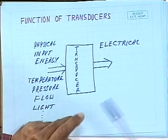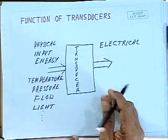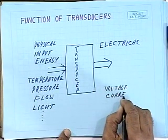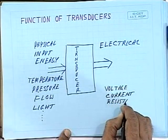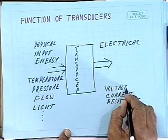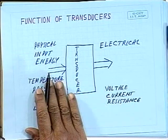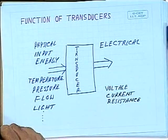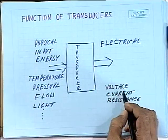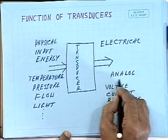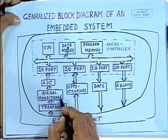The electrical parameters are essentially resistance, voltage, and current. So the transducer will produce voltage, current, or a resistance that changes according to the physical parameters. The transducer converts physical energy to electrical energy. These signals will usually be analog in nature and of very low strength, so you will require a signal conditioner to interface with the transducer, and the analog output is then converted to digital form with the help of an ADC.